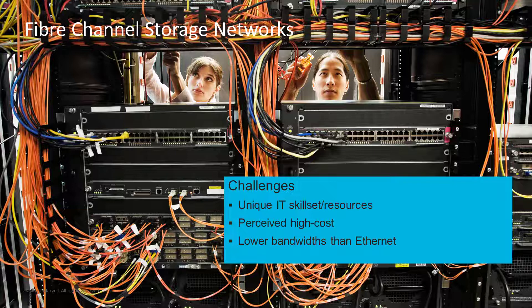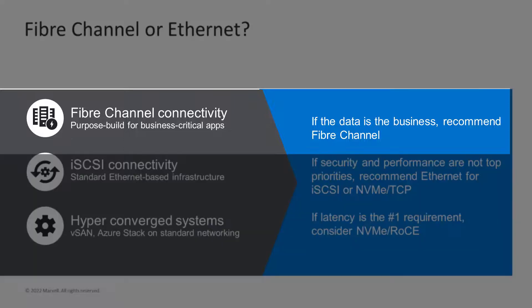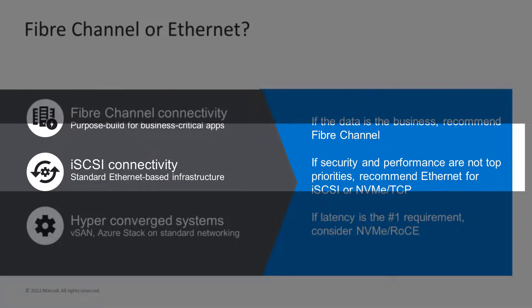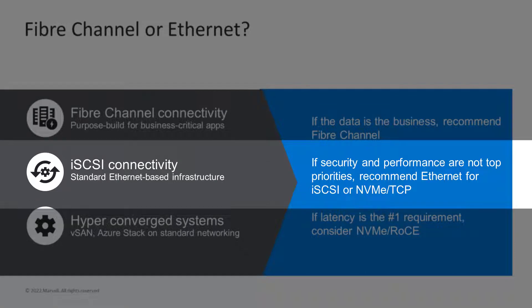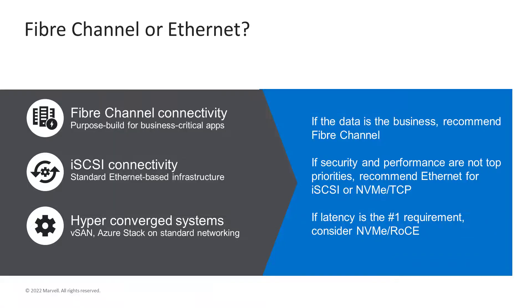Those FC speeds are below 100 and 200 gigabit Ethernet that's available, however there are few if any 100 or 200 gigabit storage arrays on the market today, and likely not for some time yet. So given all this, Fibre Channel is the de facto standard for shared storage connectivity when the data is the business — for business-critical or mission-critical applications. When performance and security are not a top priority, Ethernet is a solid choice using iSCSI or in the future NVMe over TCP. Hyper-converged infrastructure, or HCI, solutions are always well-suited for Ethernet as they combine server, storage, and networking into a single system sharing the same network. If latency is the number one requirement and scalability is not a priority, Ethernet with NVMe over RoCE could be a good choice — for example, in machine learning or AI applications.